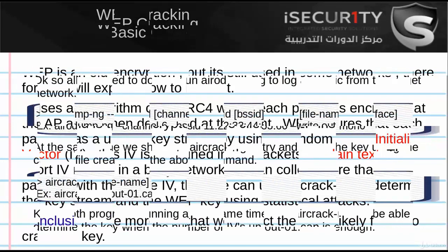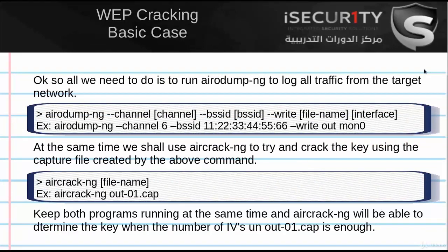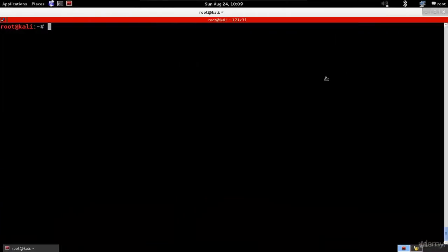To crack a WEP key, we sniff packets from the target network and gather as many IVs as possible. Aircrack-ng uses statistical attacks to determine the key stream and then the WEP key. With more than two packets sharing an IV, the chances of breaking the key are higher, so we gather as many IVs as possible. Let's see the most basic case — first, I have my Wi-Fi card in monitor mode.